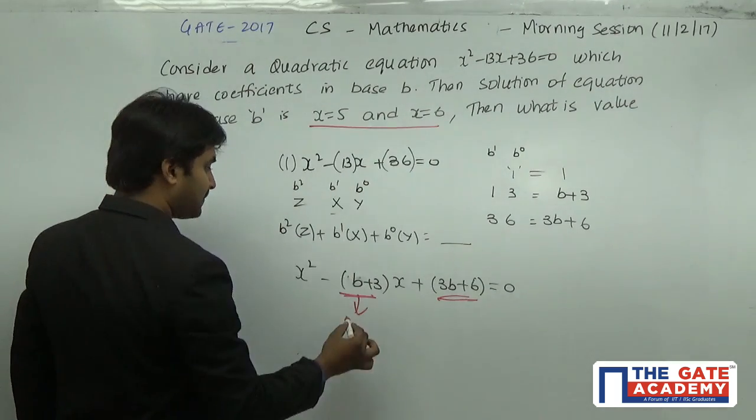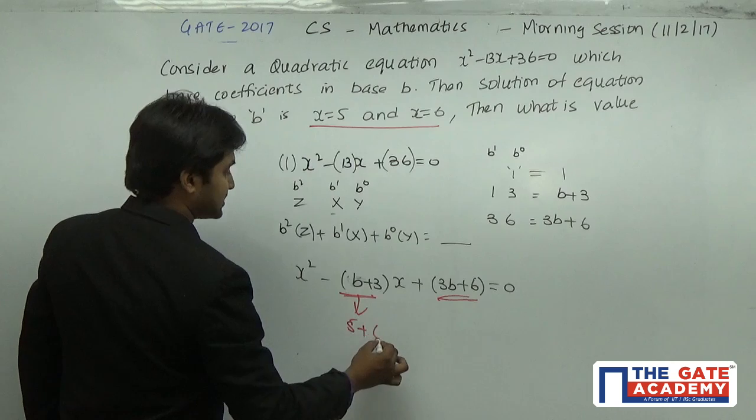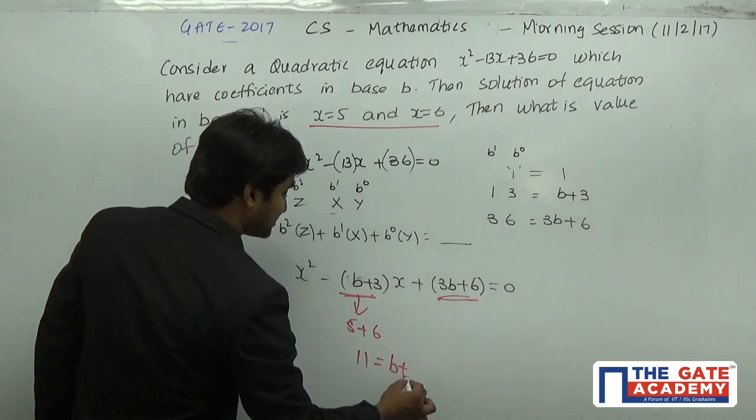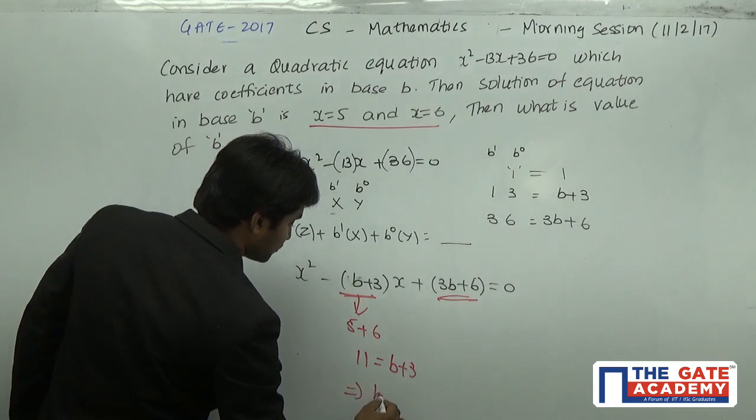So sum of the roots is 5 + 6, which is 11. 11 = B + 3, so the value of B is equal to 8.